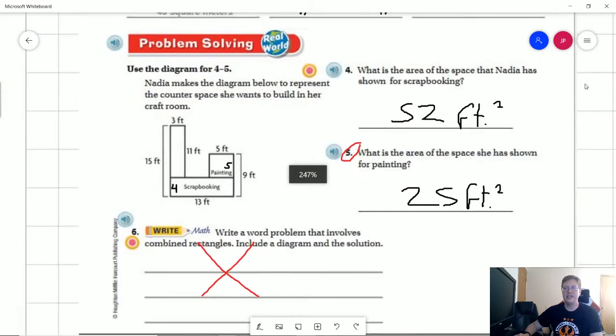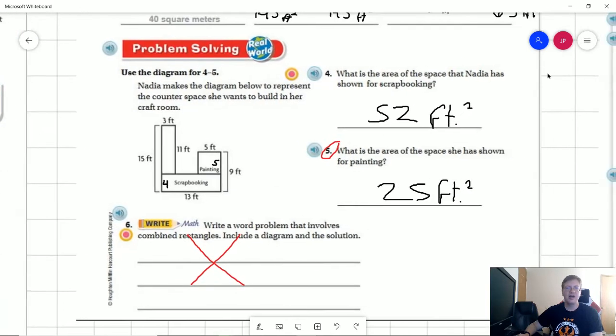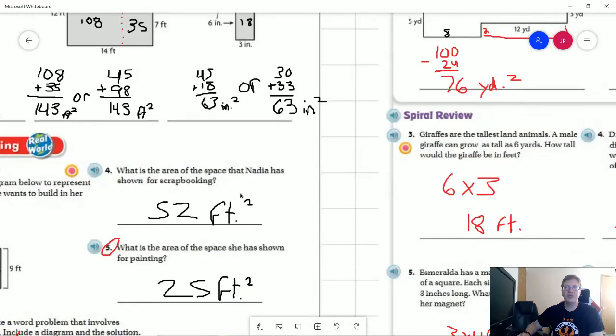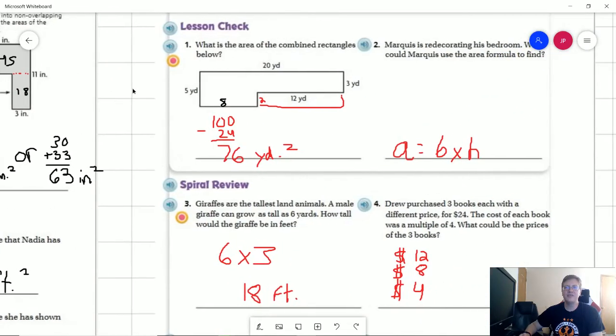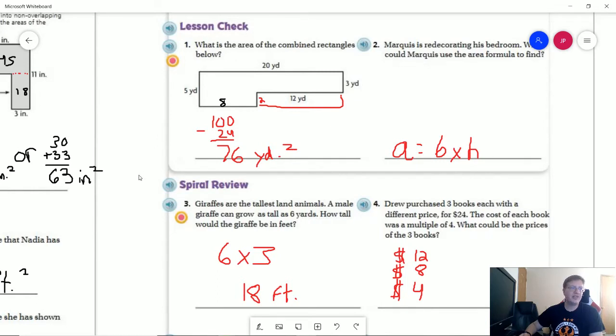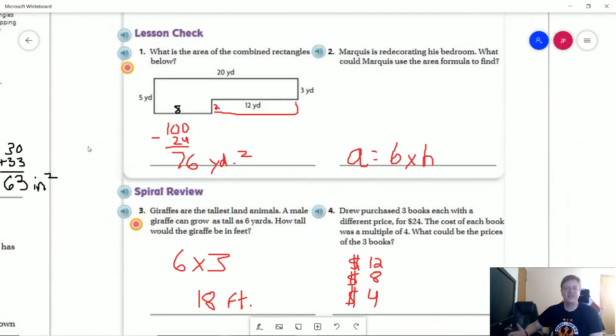Again, I went ahead and scratched out number 6 because all you need to do is figure out using a word problem like what we might find on one of the other pages and just kind of change the numbers and I don't find those particularly useful.